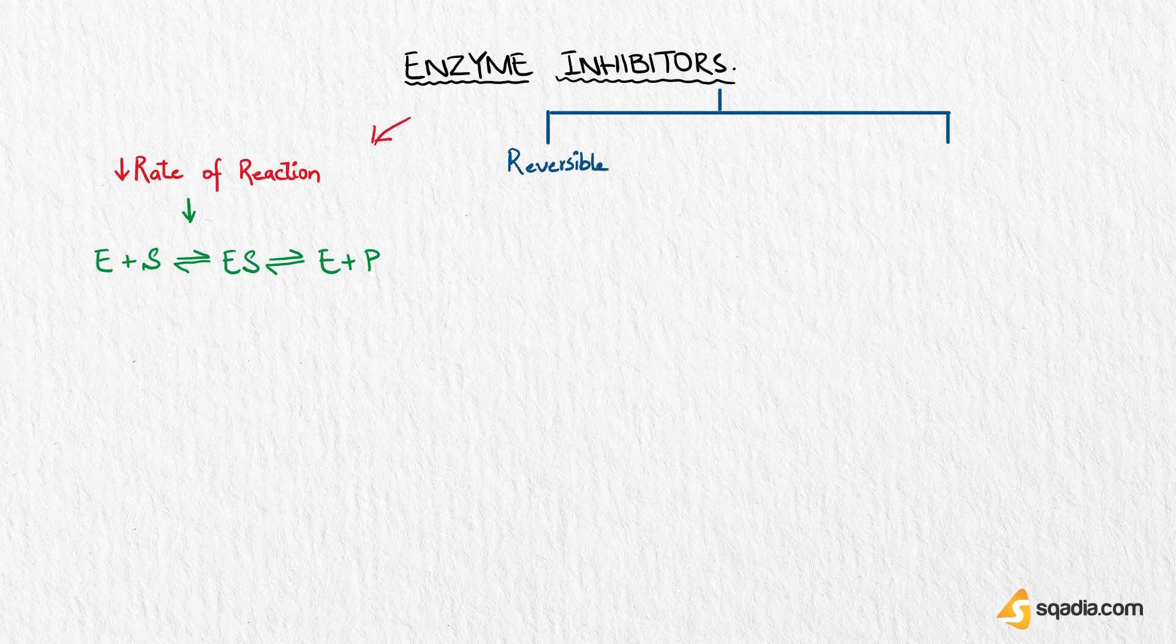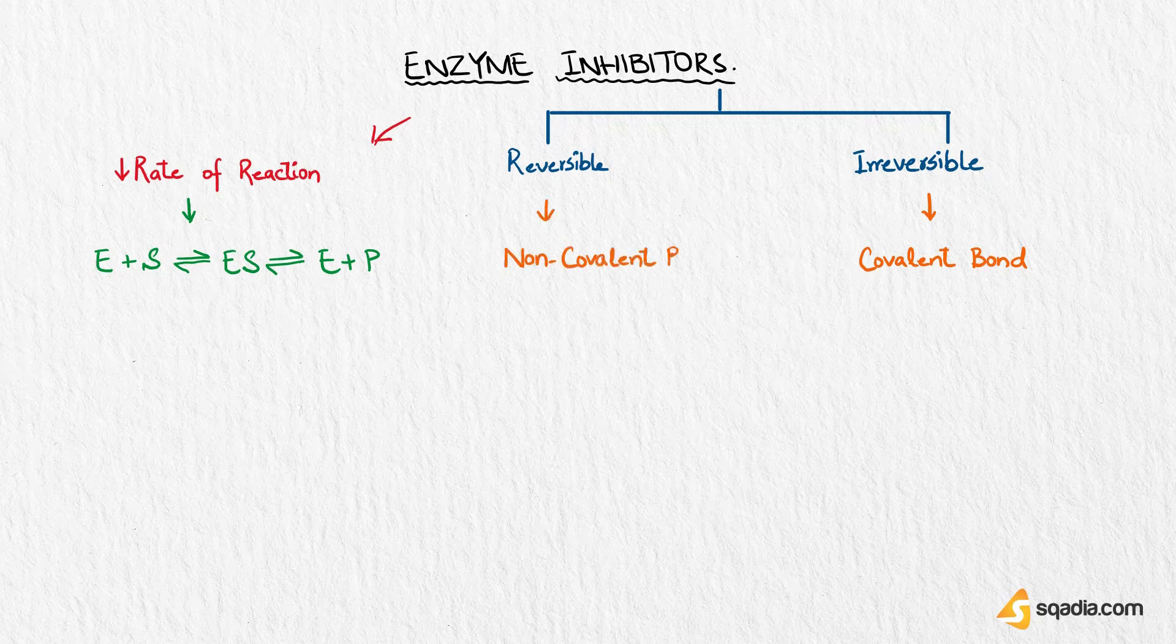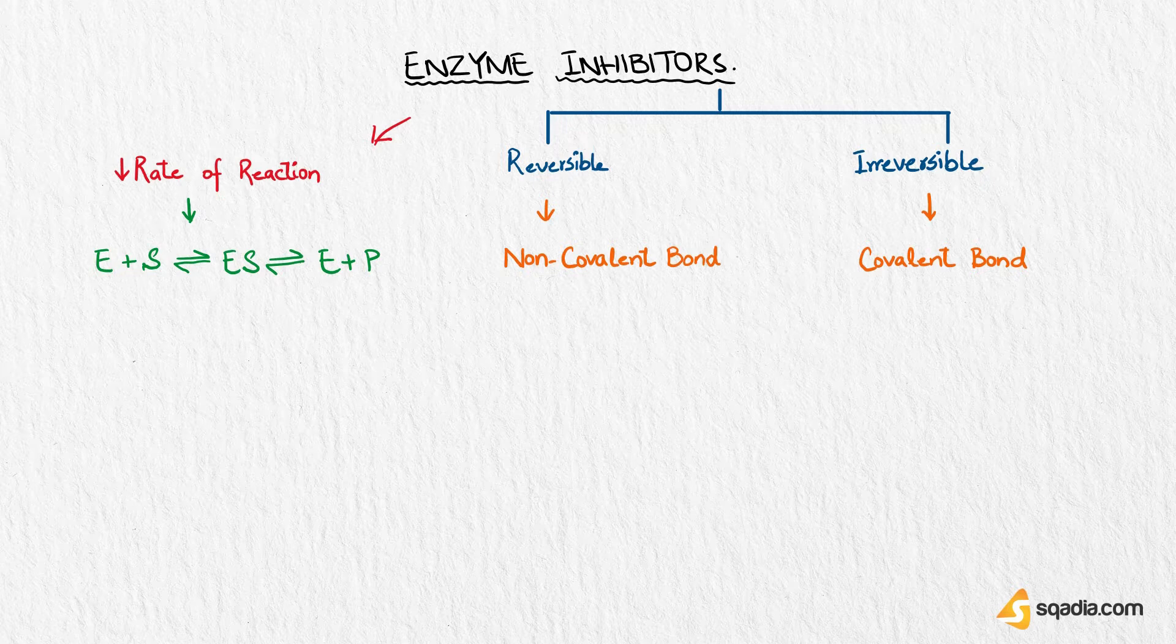And the main difference in the two that you should know are that irreversible inhibitors bind to enzymes through covalent bonds and are irreversible, while reversible inhibitors bind to enzymes through a non-covalent bond, forming an enzyme inhibitor complex. And they are reversible.